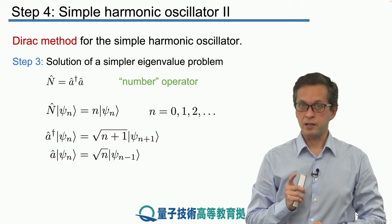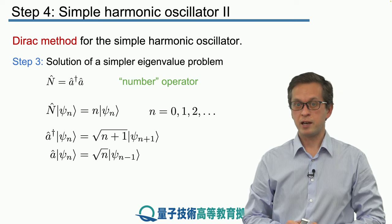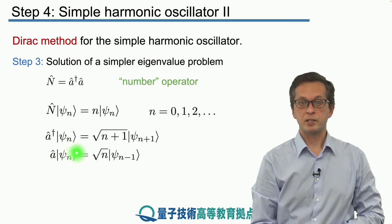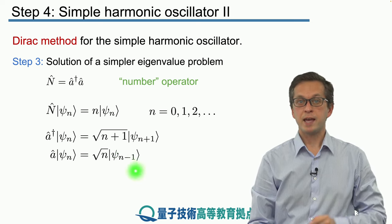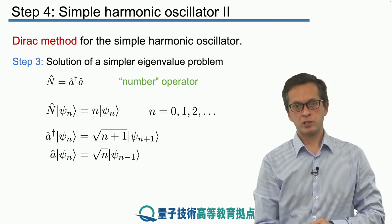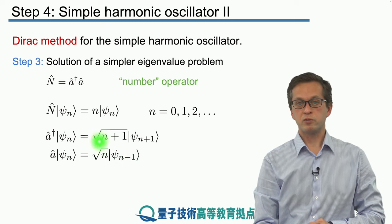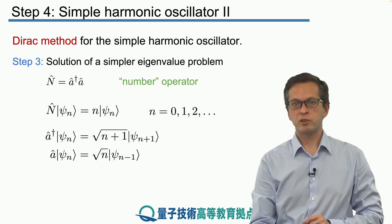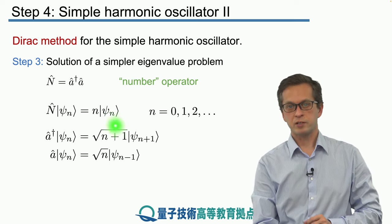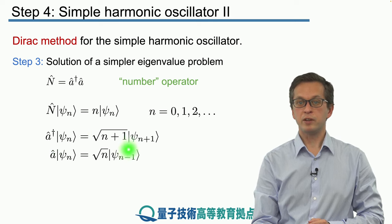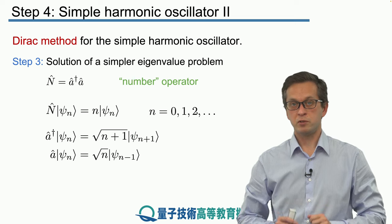On the other hand, if we apply the annihilation operator a to psi n, we move down our ladder. When a is applied to psi n, we obtain the eigenvector psi n minus 1 — we decrease the energy by one excitation. To keep our vectors properly normalized, we must introduce a factor of square root of n. A useful trick to remember these square roots: always look at the indices. For the creation operator we have n and n plus 1, so we take the square root of the higher index, n plus 1. For the annihilation operator we have n and n minus 1, so we take the square root of n.